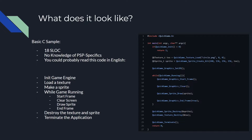So what does it look like? Here is the basic C sample — it's 18 statement lines of code. You don't really need to know anything about the PSP specifics; in fact, there's nothing in here that would indicate it is a PSP-specific API, and you could probably read this code in English — it's very human readable. We include Quick Game, set up a main function in C, and check if the game initialization fails. If it does, we return one; otherwise it succeeded and we can go ahead and do the rest of our calls.